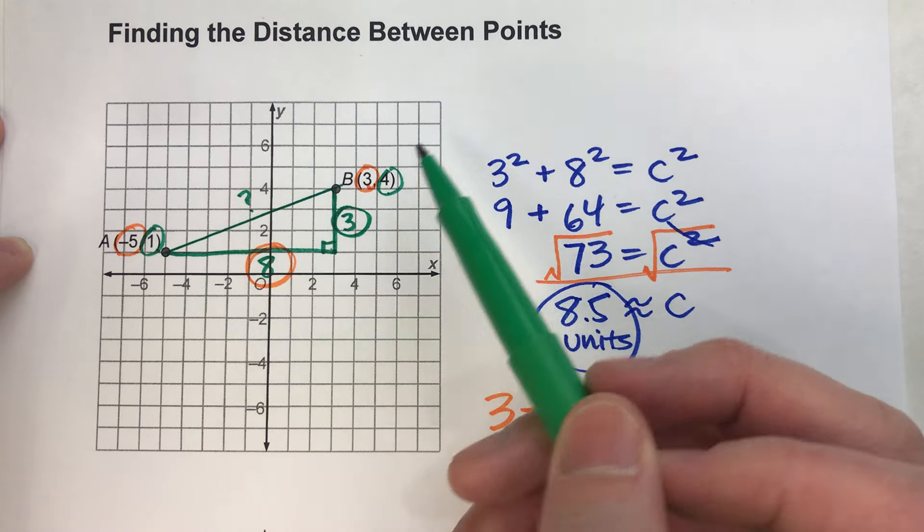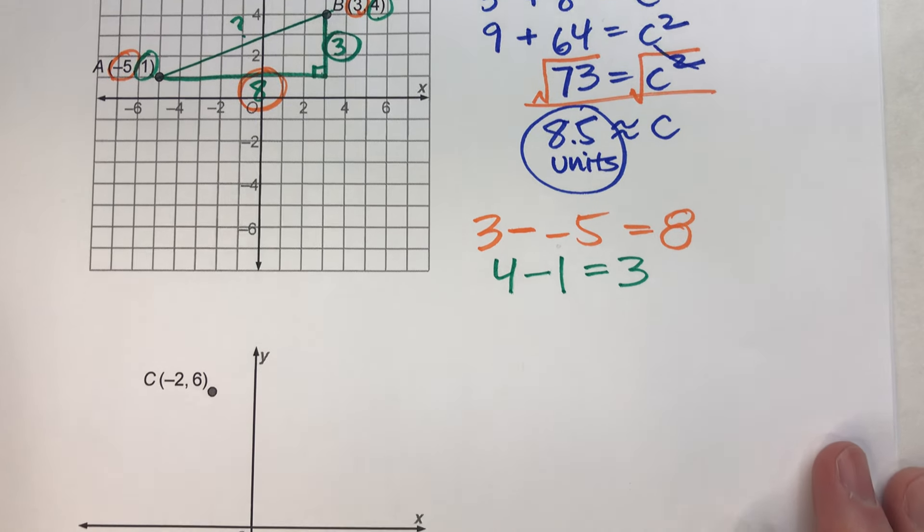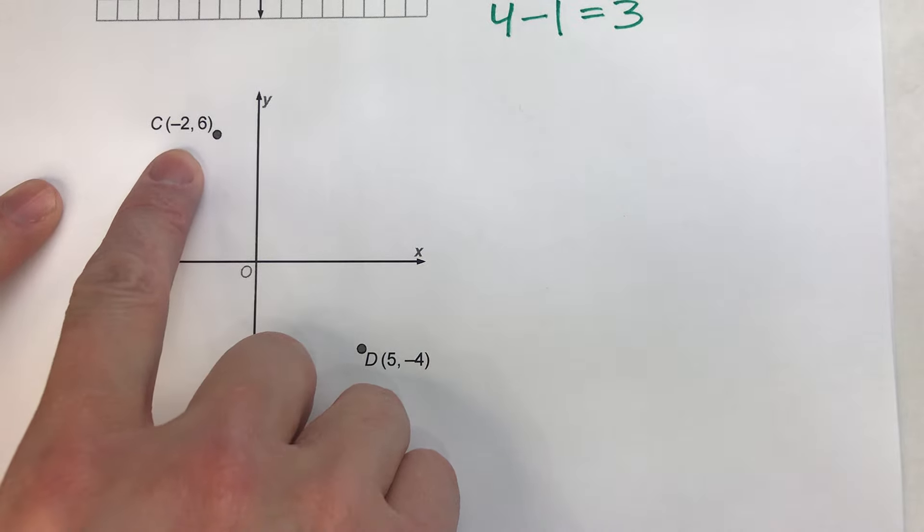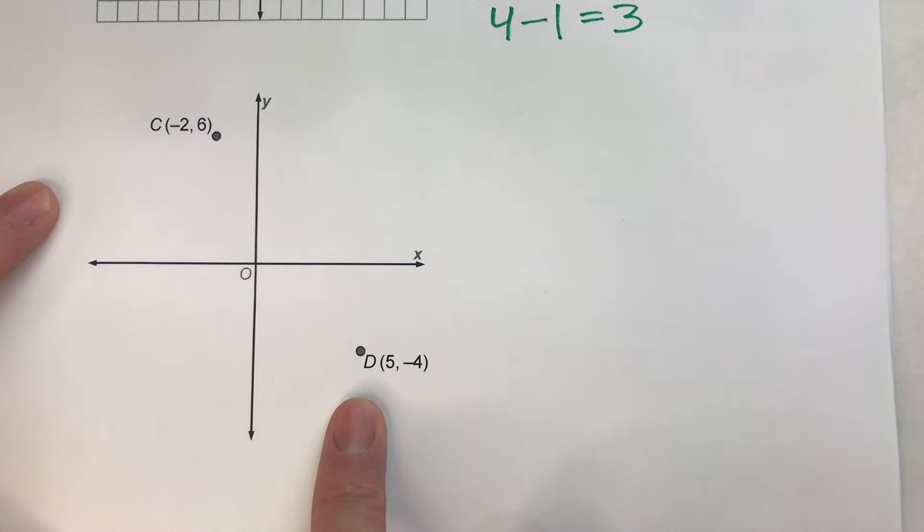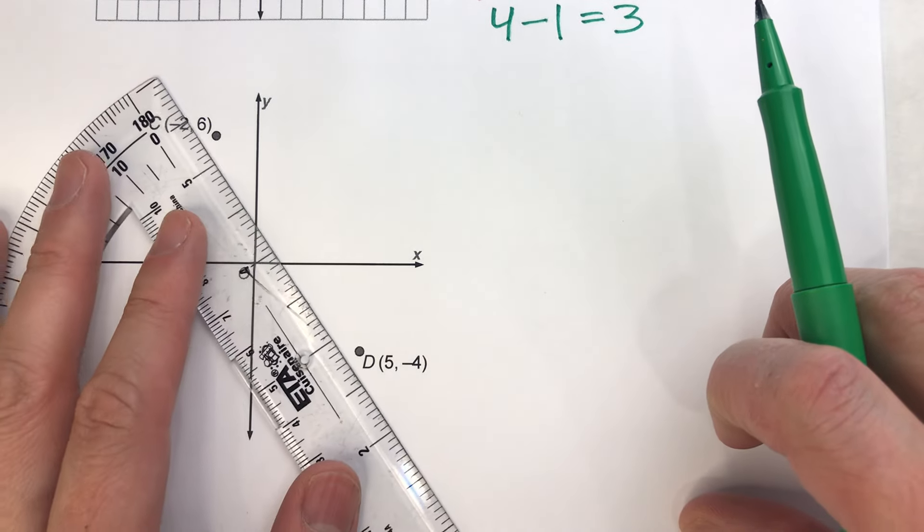Now, you're probably thinking, well, why do I need to do that? I could just count the squares. Well, let me give you a second example. Point C, negative 2, 6. Point D, 5, negative 4. Notice, we can't count the squares here. So, we can do the same thing we did before. I want to find the distance between these two points, so I'm going to connect them with a line.